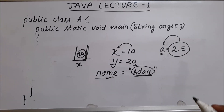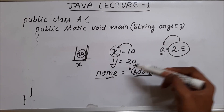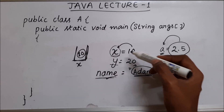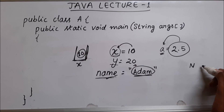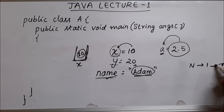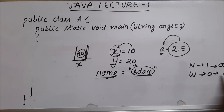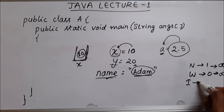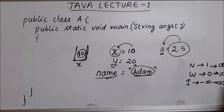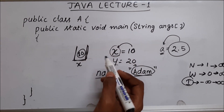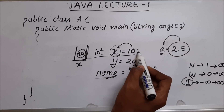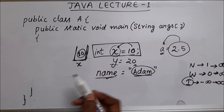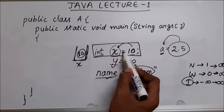So now you can see x, y, name, and a are all variables. Inside x we have put an integer value. In mathematics, natural numbers are from 1 to infinity, whole numbers are 0 to infinity, and integers are from minus infinity to infinity. This integer that we learned in mathematics is the same thing we are going to use here. In Java, we are going to call it int instead of integer. This is a proper statement and it will end with a semicolon.